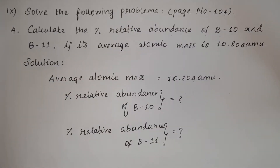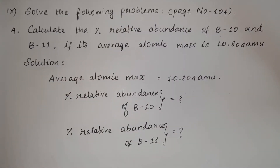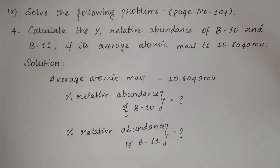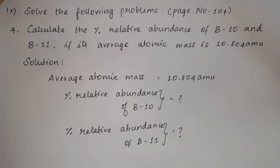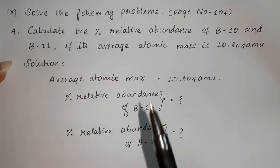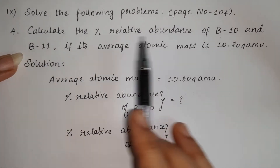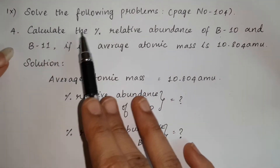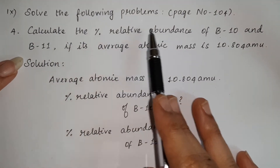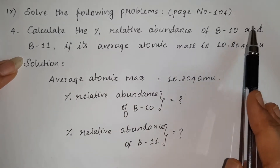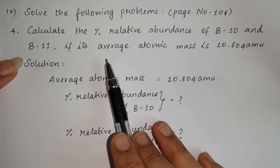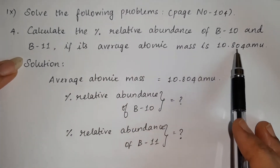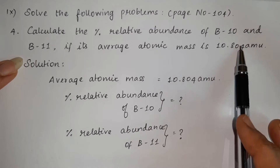Students, now we are going to discuss the science of the 7th chapter — Atoms and Molecules — chapter in textbook evaluation, 9th standard. Solve the following problems. Page number 104, problem number 4. Calculate the percentage relative abundance of Boron-10 and Boron-11, if its average atomic mass is 10.804 atomic mass units.